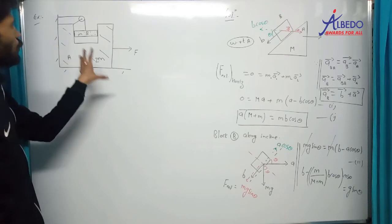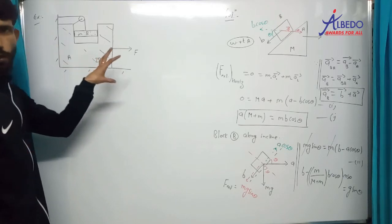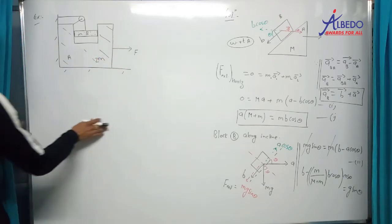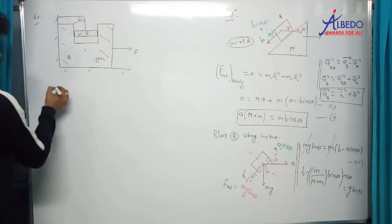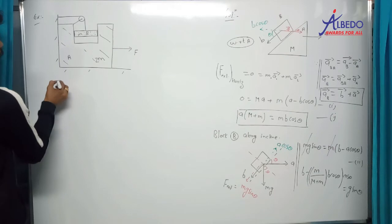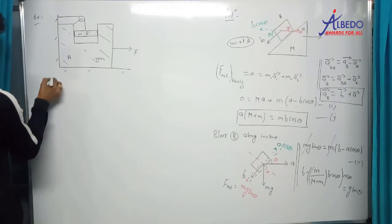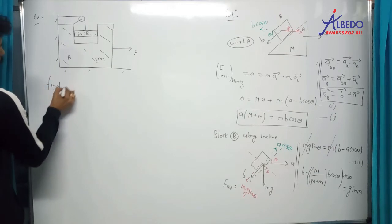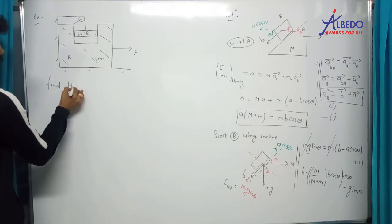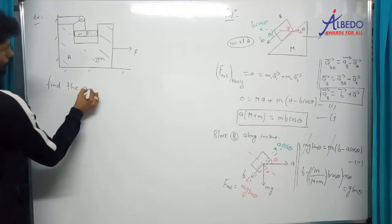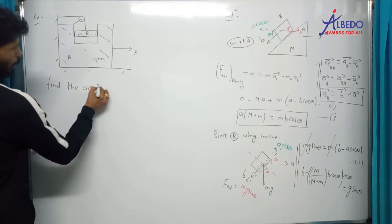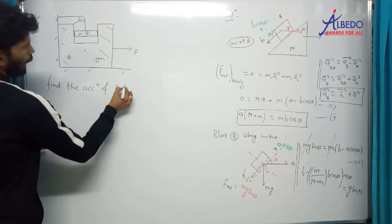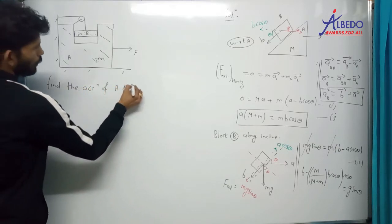Main thing यह है कि constraint और equations को अच्छे से समझाएं. लिखते हैं: find the acceleration of A and B.